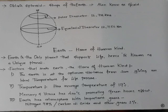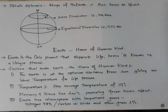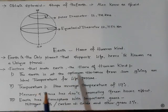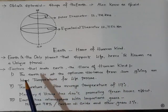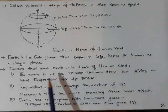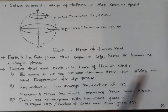The earth is the home of humankind. It is the only planet which has life on it, because of abiotic conditions such as optimum temperature, presence of water, light, and soil that favor the growth of plants and the animals that depend on this system. Hence the earth is known as the unique planet. The earth is at the optimum distance from the Sun, giving an ideal temperature for life processes.